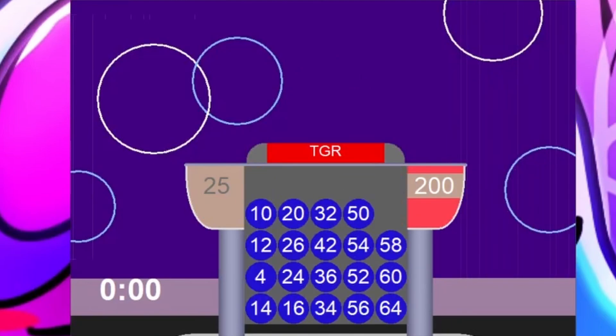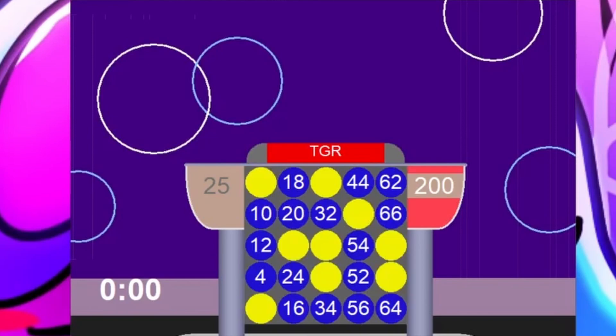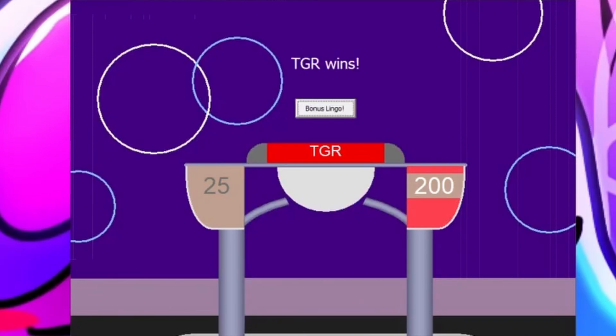And that's time. TGR is the winner, unfortunately. 25 to 200. TGR has won $200. And now, TGR, you're gonna be able to face off against Bonus Lingo for a jackpot of $10,000. Are you ready? As ready as I'll ever be.